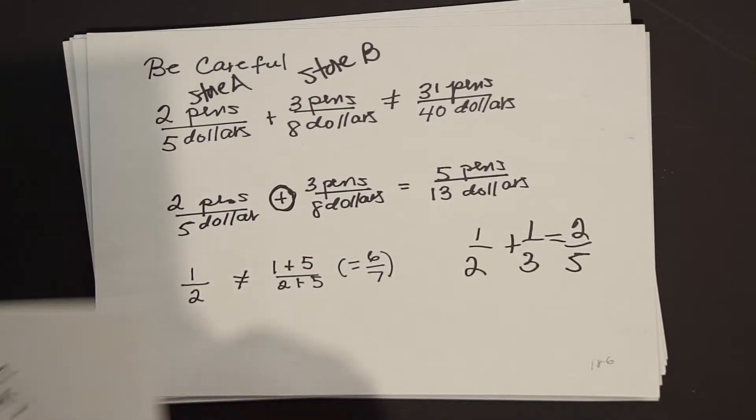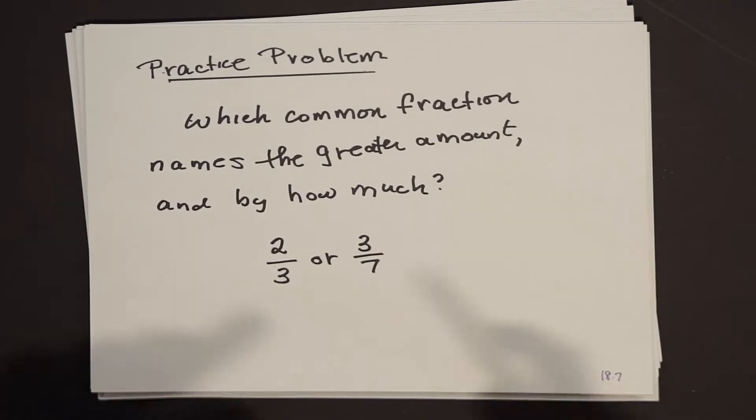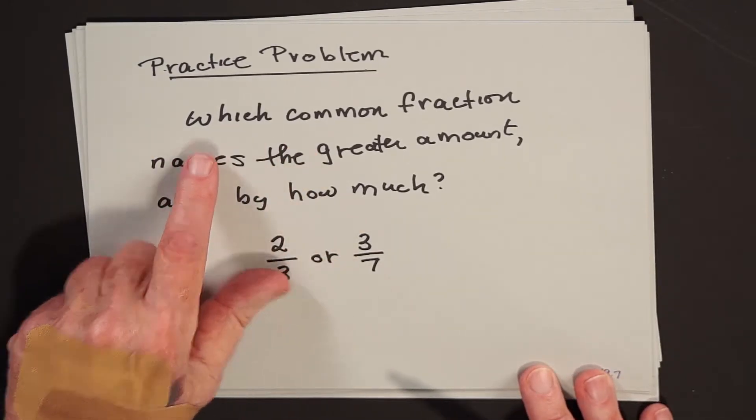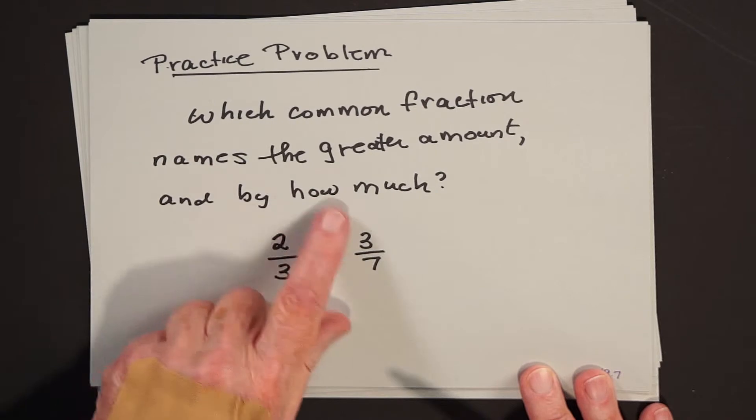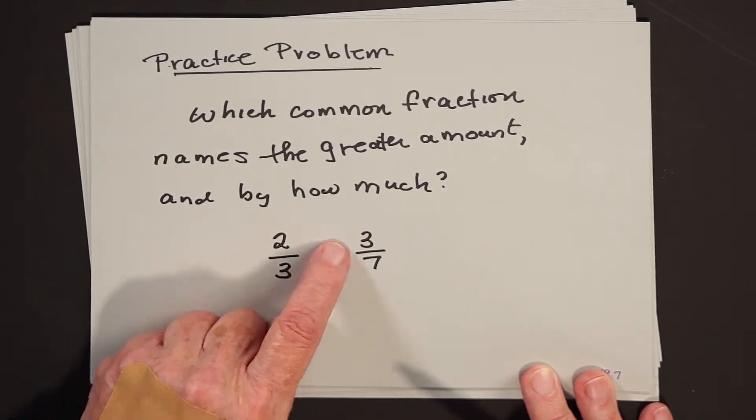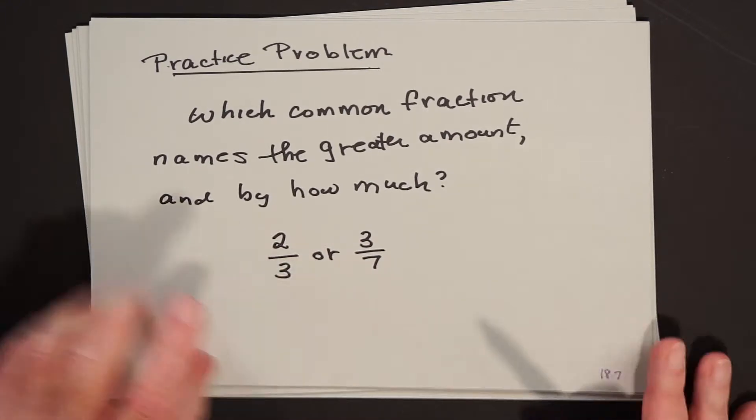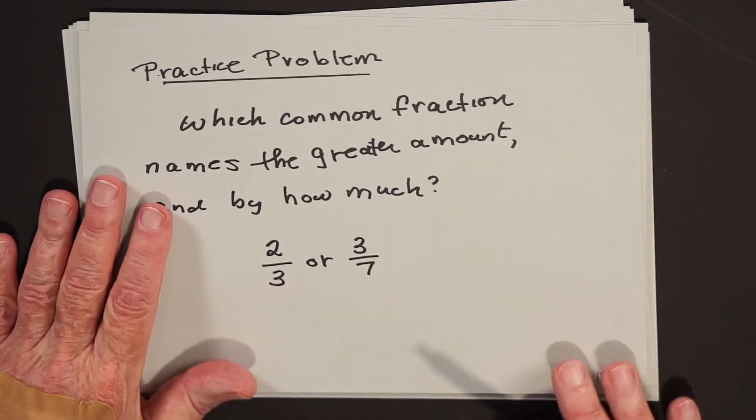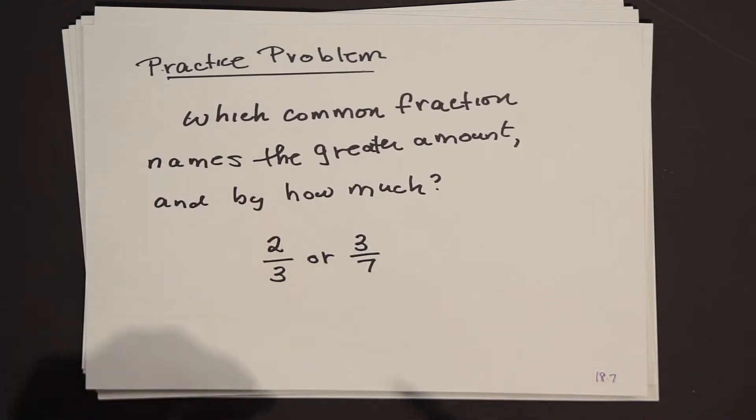But for now, that brings us to our close of today's lesson, which usually is signified by what? We do a practice problem in which I write the problem down here. And what's going to happen is you look at this problem, which common fraction names the greater amount, and by how much, two-thirds or three-sevenths. Pause the video. Do the problem. And after you finish the problem, you come back and watch my solution, and see how it compares with yours.